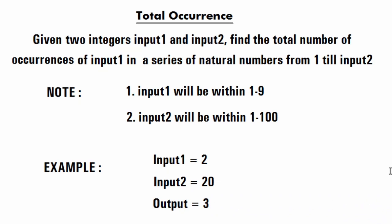Hello and welcome to Coding Bites. Today's question has been asked in Wipro Drive recently. The question is: given two integers input one and input two, find the total number of occurrences of input one in a series of natural numbers from one to input two. The range of input one is between one to nine, and the range of input two is within one to one hundred. For example, if input one is two and input two is twenty, the output will be three.